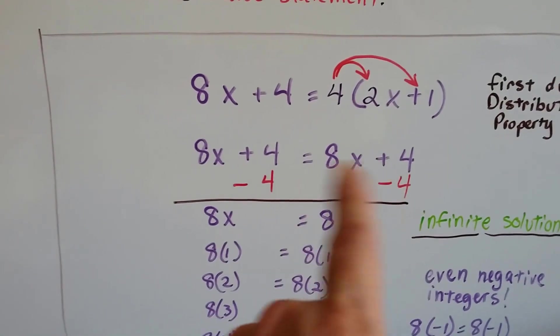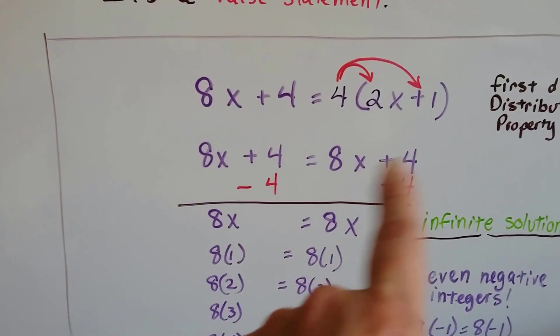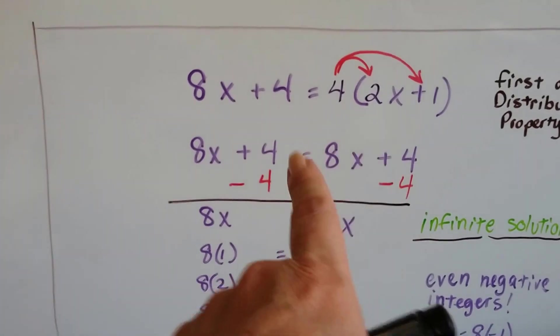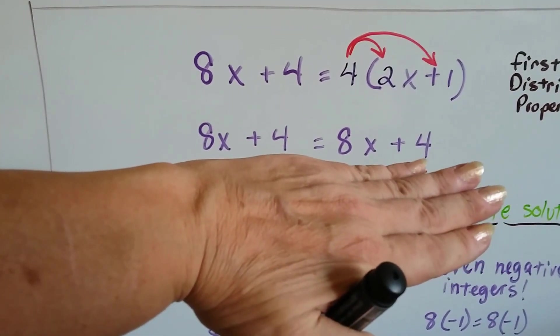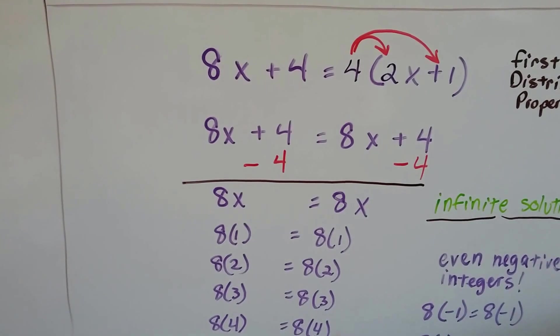We did our distributive property. We came up, this side is the same as this side. It's like a mirror image. Well, not exactly mirror image because the 4 would be there, but it is the exact same equation on each side of the equal sign, isn't it?